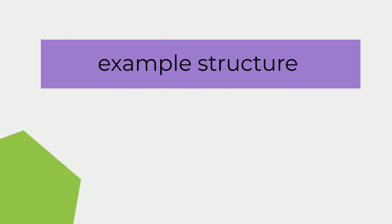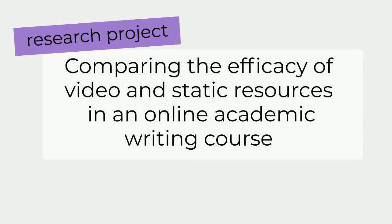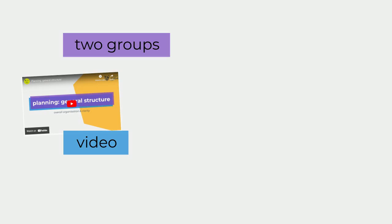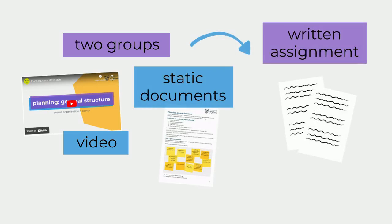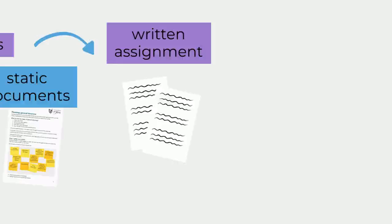Let's think about how to apply this in an example method structure. Our research project compares the efficacy of video and static resources in an online academic writing course. Two groups take the course — one receives content in video format, and the other gets the same content as static documents. At the end of the course, all students complete a written assignment, and then we compare the grades for the two groups.